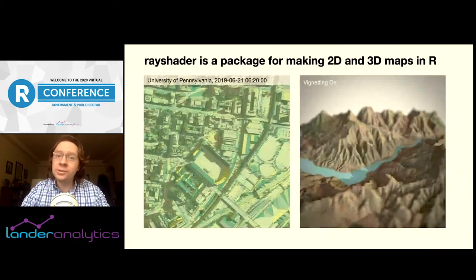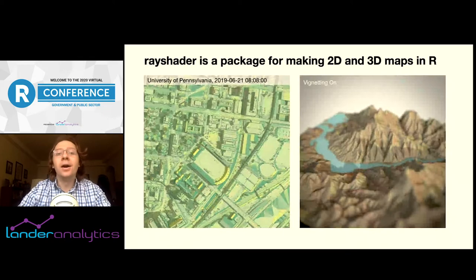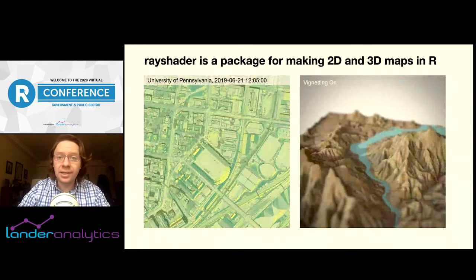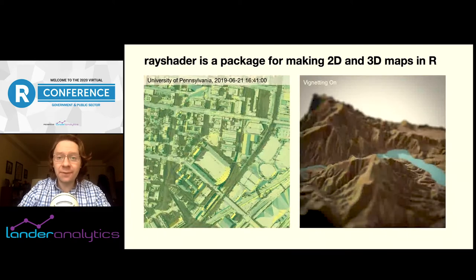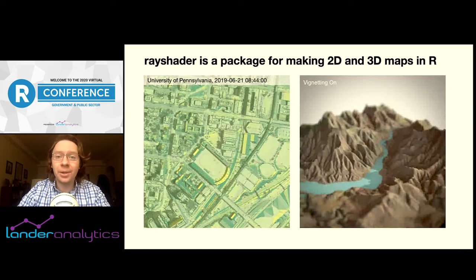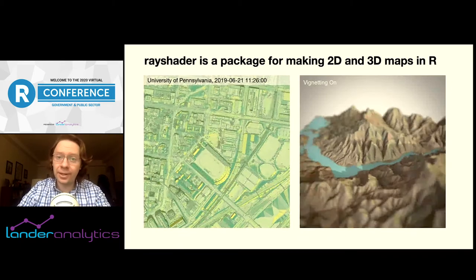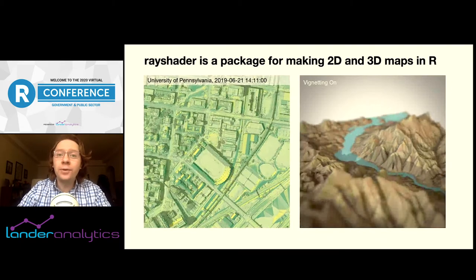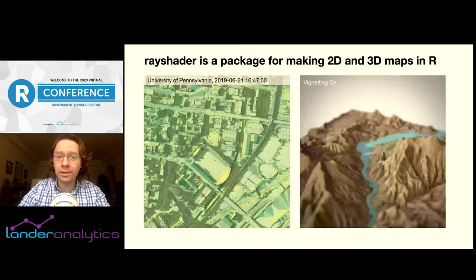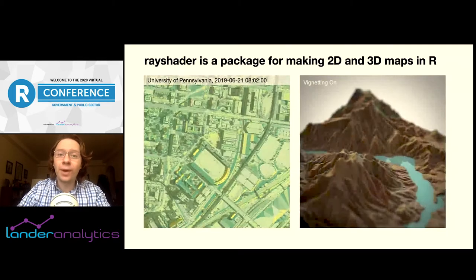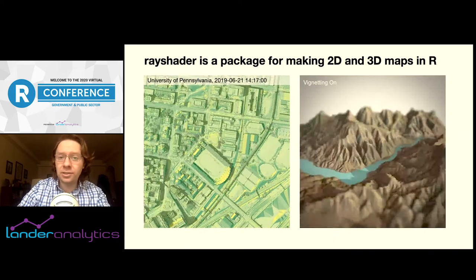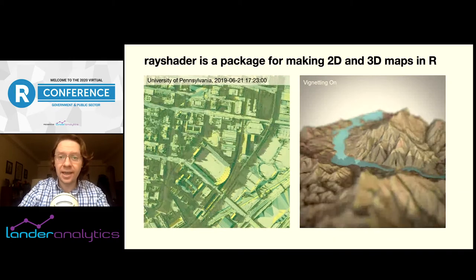So first things first, what is RayShader? RayShader is a package for 2D and 3D data visualization in R. Specifically, RayShader uses a technique called ray tracing to realistically simulate how light falls on landscapes and 3D surfaces. You can see how RayShader calculates the shadows cast by buildings in Philadelphia as the day progresses, using LiDAR data from the city along with the SunCalc package to calculate the position of the sun in the sky.